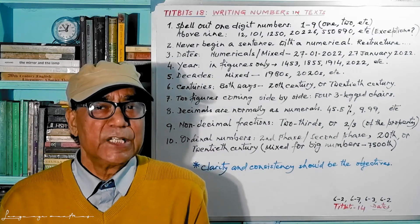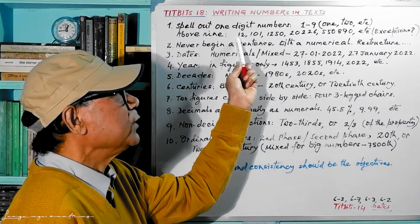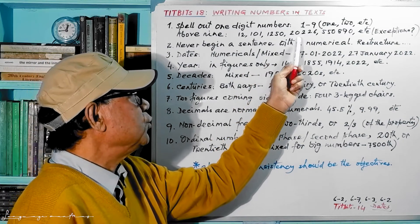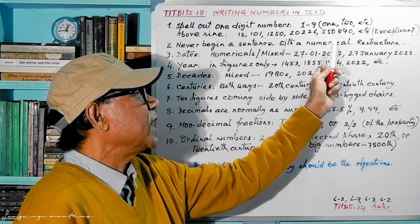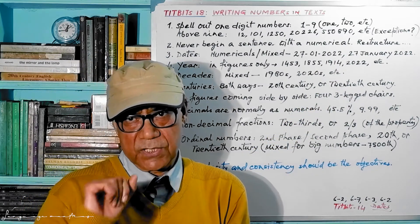If it is more than that, then what will happen? You have to write in figures like this: 12, 1-2, 101, 1-1-2, 502, 0-2-2, 65508-9-0.